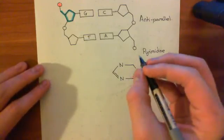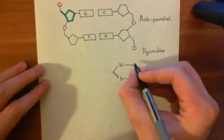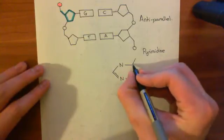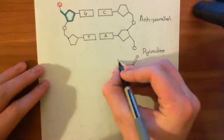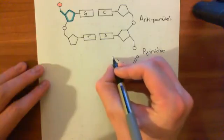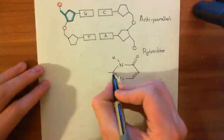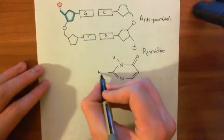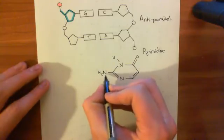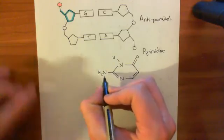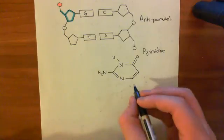However, in guanine you don't have this double bond here. Instead you have a carbonyl group up here and then you have a nitrogen off the hydrogen. In addition, you also have an amino group sticking off here, and this is actually the amino group that the mitomycin C is going to bind to.